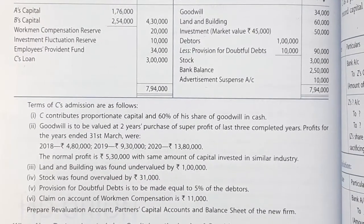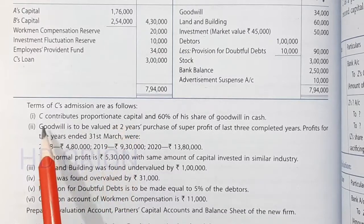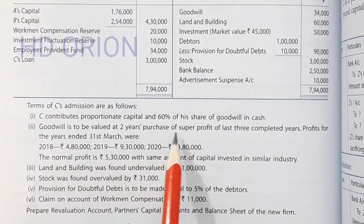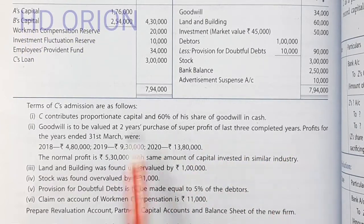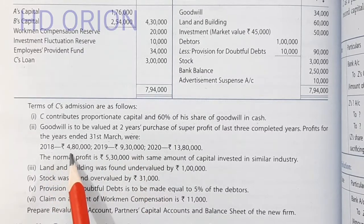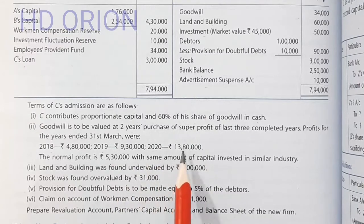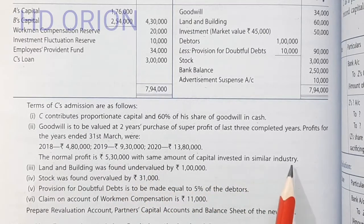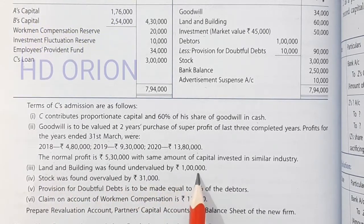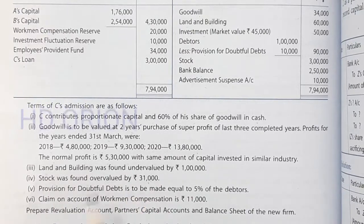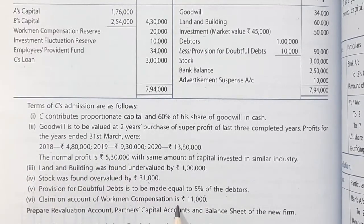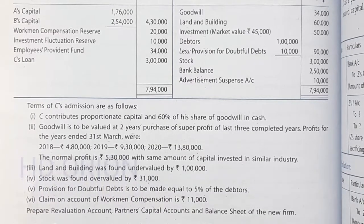Terms of C's admission are as follows: C contributes proportionate capital and 60% of his share of goodwill in cash. Goodwill is to be valued at 2 years purchase of super profit of last 3 completed years. Profits for the year ended 31st March were: 2018 — 4,80,000; 2019 — 9,30,000; 2020 — 13,80,000. The normal profit is Rs 5,30,000 with the same amount of capital invested in similar industry. Land and building was found undervalued by Rs 1,00,000. Stock was found overvalued by Rs 31,000. Provision for doubtful debts is to be maintained equal to 5% on debtors. Claim on account of workman compensation is Rs 11,000.